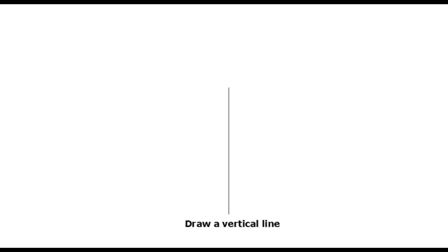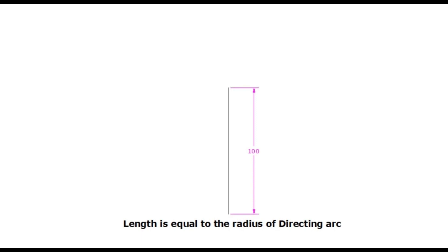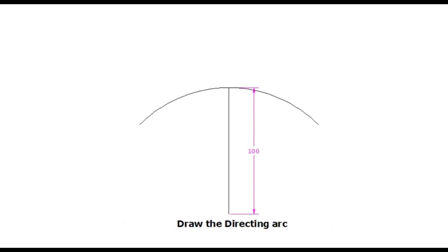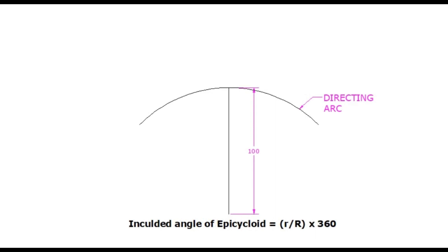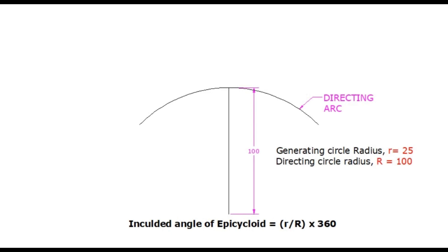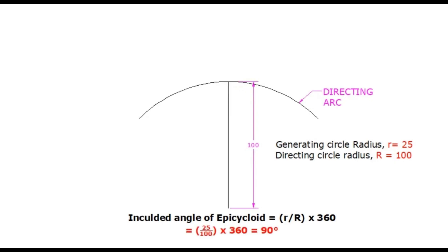Draw a vertical line. The length of this line is equal to the radius of the directing arc. With the end point of the line as center, draw the directing arc. The included angle of the epicycloid is calculated by the formula: small r divided by capital R, multiplied by 360. Small r is the radius of the generating circle and capital R is the radius of the directing circle. In this example, the generating circle radius is 25 mm and the directing circle radius is 100 mm. Therefore, angle theta equals 25 divided by 100 into 360, which is 90 degrees.